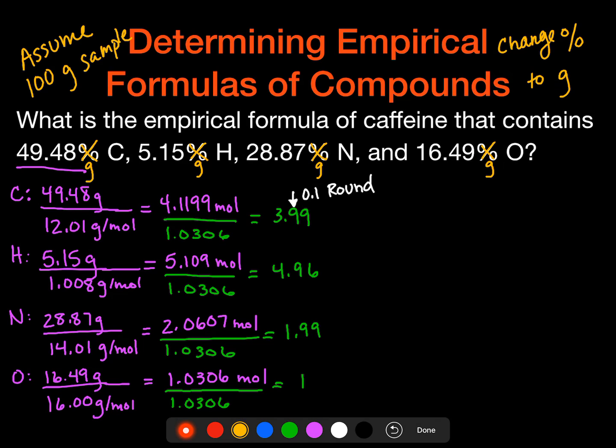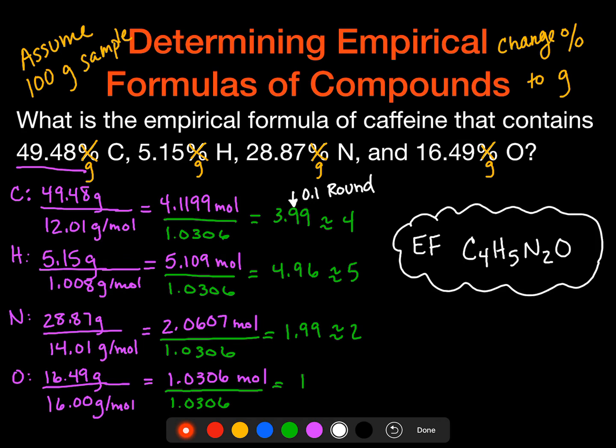So when I do that, I end up getting 4 to 5 to 2 to 1. And so that means my empirical formula is going to be C4H5N2O. And that is the answer to this particular question.